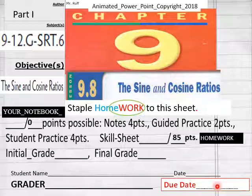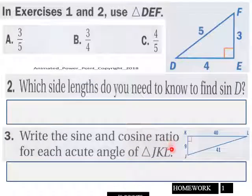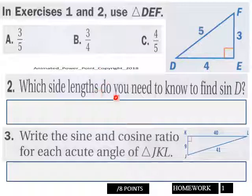For online learners and homeschoolers, page one of today's homework. In exercises one and two, use triangle DEF. So I got two here, use this diagram up here to find which side lengths you need to know to find sine D. So figure that out.